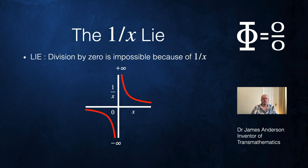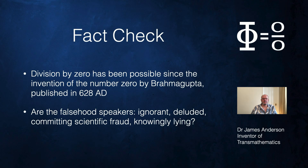Let's start with a fact check. Division by zero has been possible since the invention of the number zero by Brahmagupta. Brahmagupta published his work in 628 AD. I'll put an end card at the end of this video to one of my own videos about Brahmagupta. That video will also teach you how to divide by zero, and I'll put links in the description below.